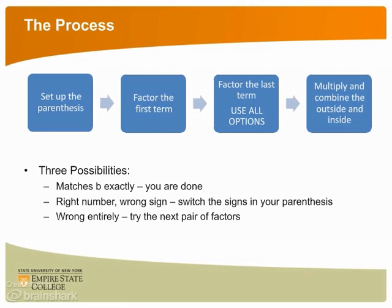We will be methodical in our guess and check approach. First, we set up our parentheses just as we did in the more simple cases — a minus at the end still signifies a plus and a minus inside our parentheses. Next, we factor the leading term, then factor the last term, but we have to include all options. This means that if you write the factors in one order, you must also include the opposite order. Then we do the O and I steps of the FOIL method — the outsides and insides — to try to match to the middle term.